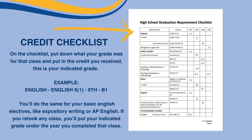As you might remember, you'll need a total of four English credits in order to graduate. On the checklist, put down what your grade was for your English class and put in the credit you received. That is your indicated grade.